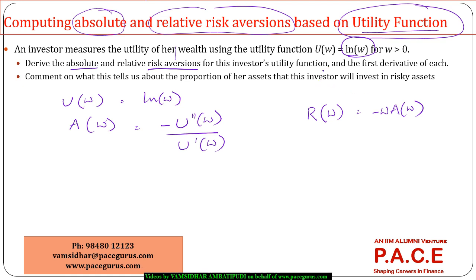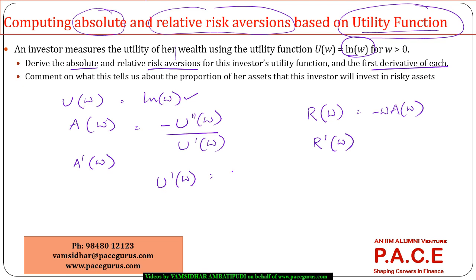I am also asked to find the first derivatives of both measures, so I need to find A dash of w and R dash of w. Starting from u of w, I compute u dash of w — the first derivative of log w is 1 by w. Similarly, u double dash of w, the second derivative, is minus 1 by w squared.